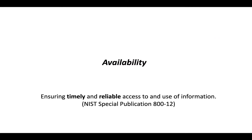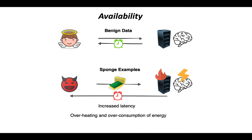Availability. NIST defines availability as timely and reliable access to and use of information. For our purposes, we consider availability to refer to the amount of time and energy required for the machine learning model to make a decision. We define a new class of adversarial examples that target latency and call them sponge examples. These are data points that take significantly more time or energy to make a decision. We do not increase the input dimension and the sponge examples are well within the scope of normal well-formatted data.